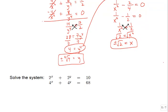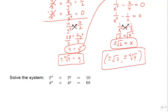We can write the solution as x equals plus or minus root 2 and y equals plus or minus fourth root of 4. That represents four different points: every possible combination of the positive and negative signs for x and y.